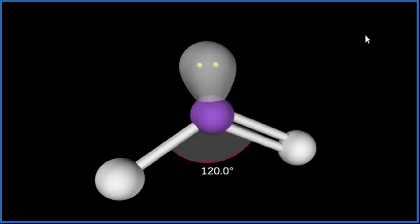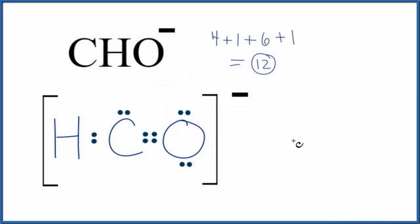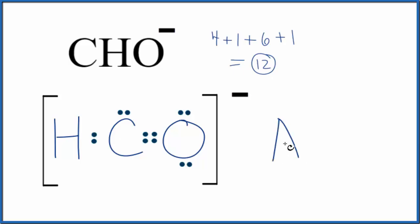Let's go back to our Lewis structure. If you use the AXE notation to find the molecular geometry for CHO minus, A would be the central atom, X is the number of atoms bonded, we just have the two, the hydrogen and the oxygen, E would be the lone pairs. We have one. You'd look this up, you'd see that you have a bent molecular geometry.